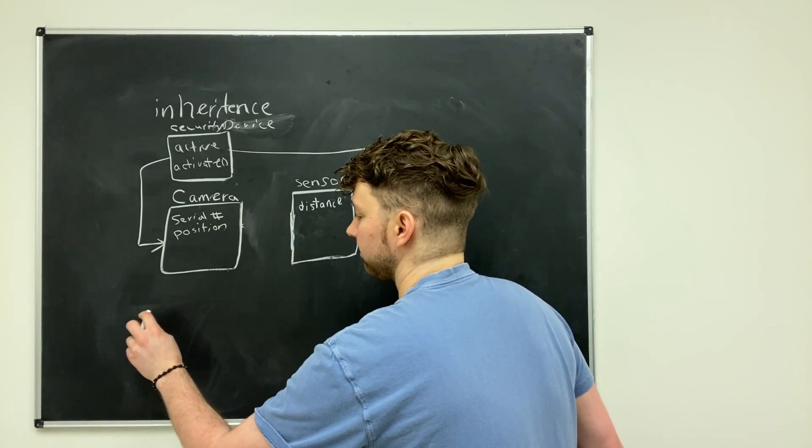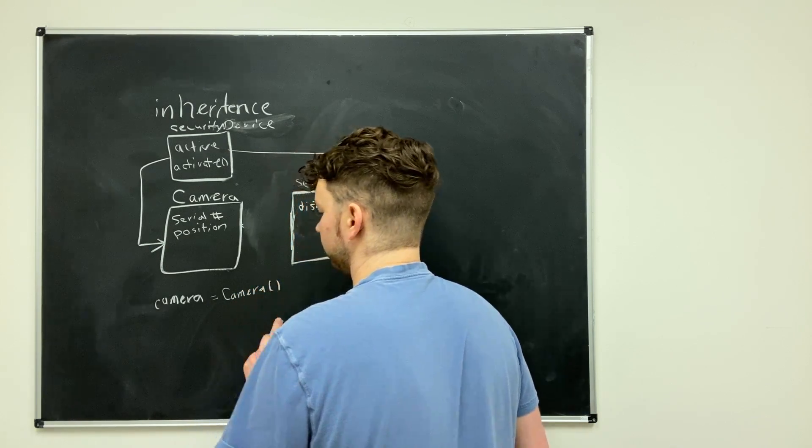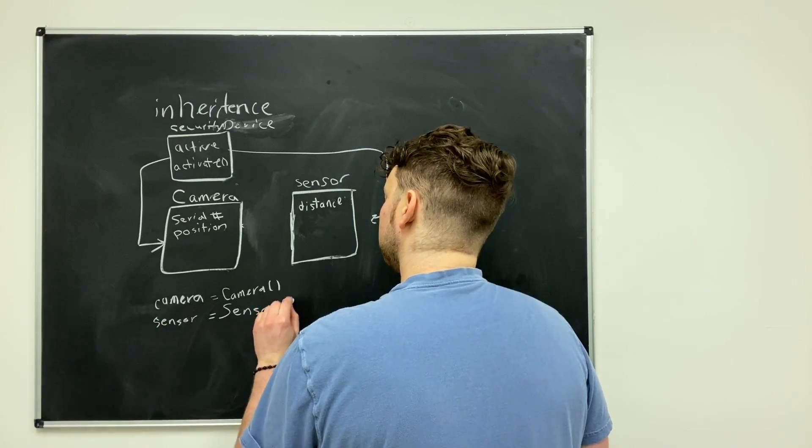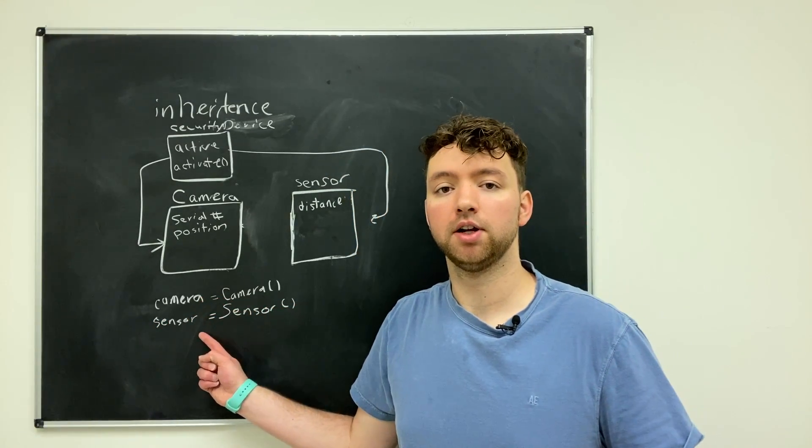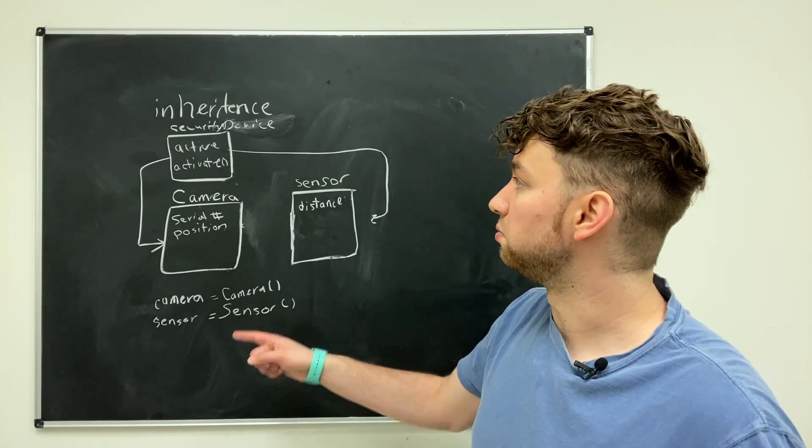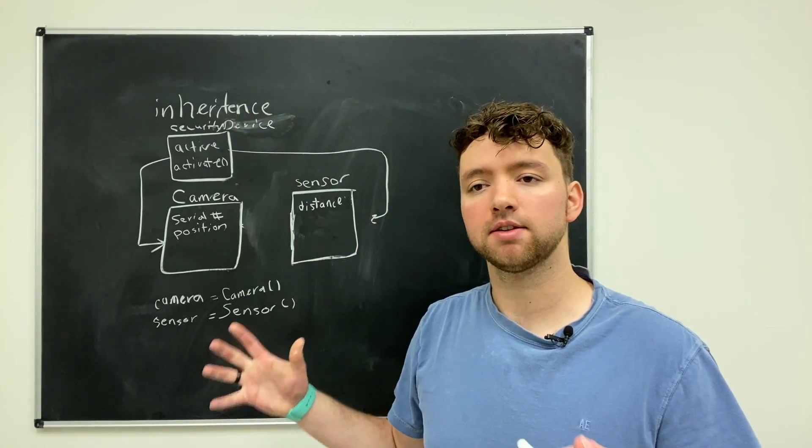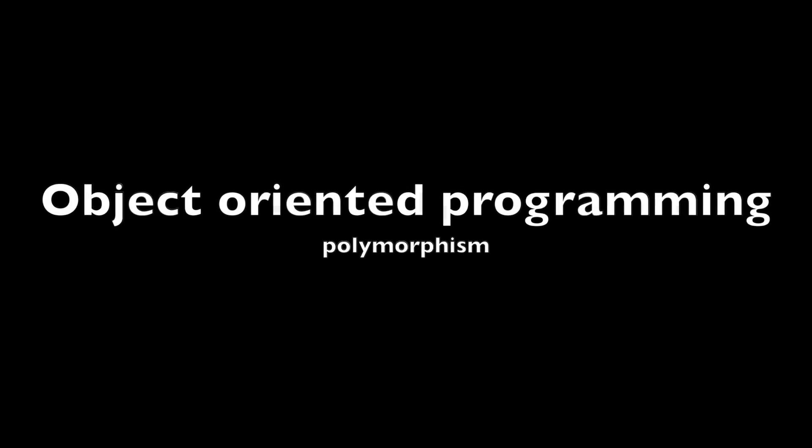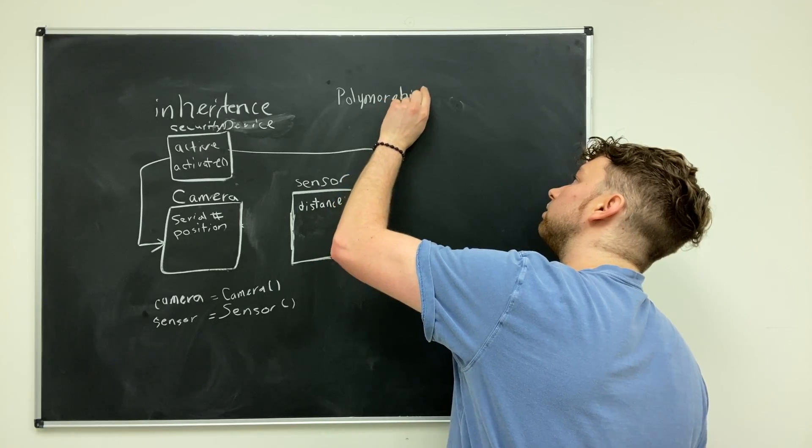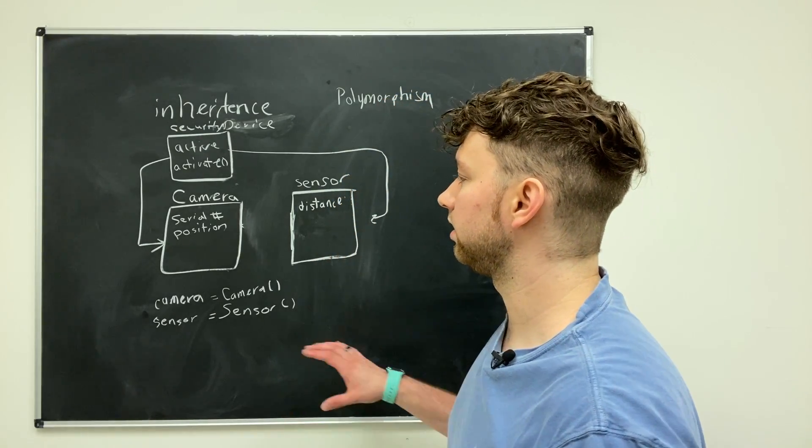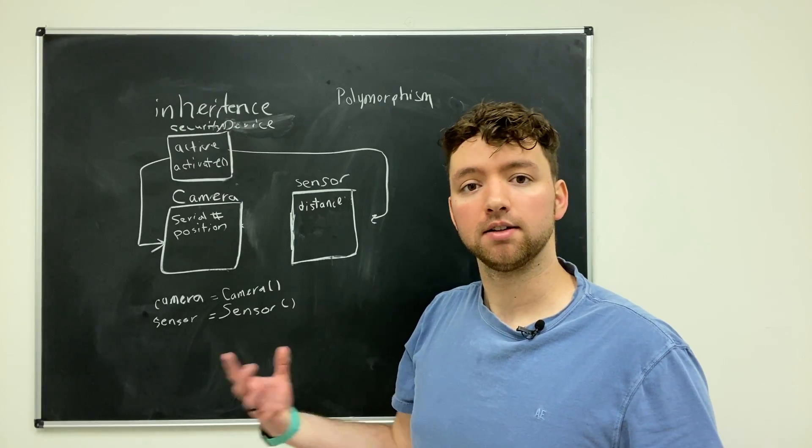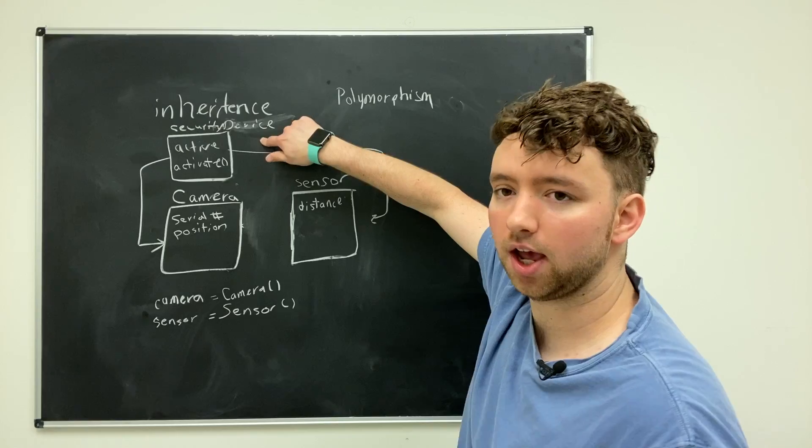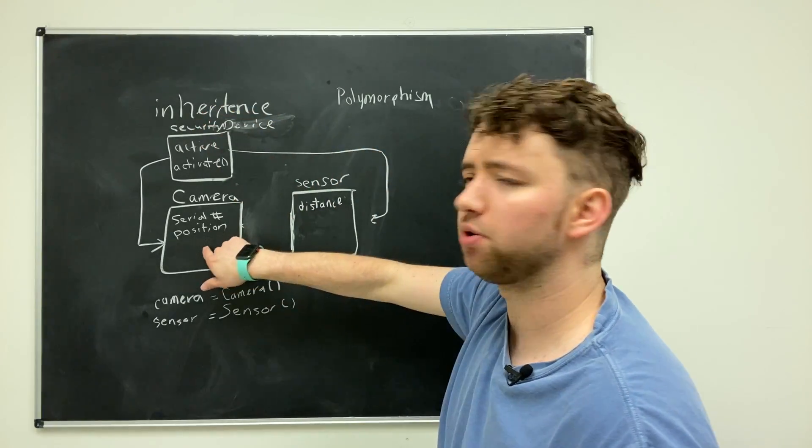Now, when you create a camera object and then you create a sensor object. These objects here, camera and sensor, they are both considered to be of type security device. And this introduces the concept of polymorphism. When we use inheritance and two classes derived from the same class, they are of the same type when you look at them a little bit more generally. If you say, hey, these are both security devices, that works. Are they both cameras? No. Are they both sensors? No.